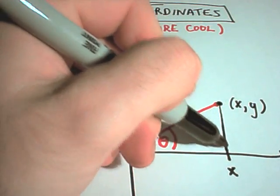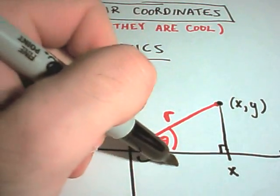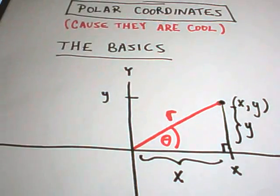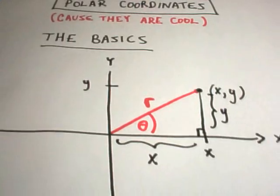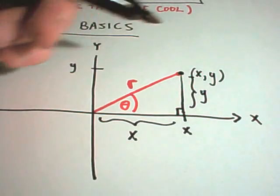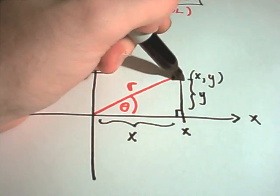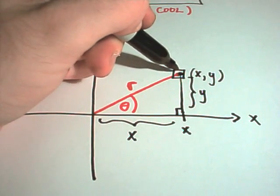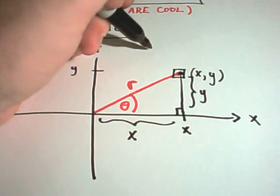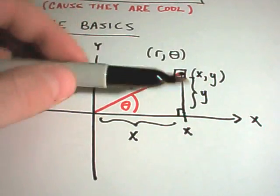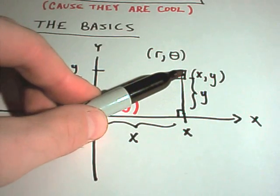And notice we also get a little right triangle here. We've gone over x units, up y units, so from this little diagram we get an equivalent form. And an equivalent way to describe this point, when we go over x units and up y units, we basically label it as r, theta. And r says that's the distance you go out, theta is the angle.